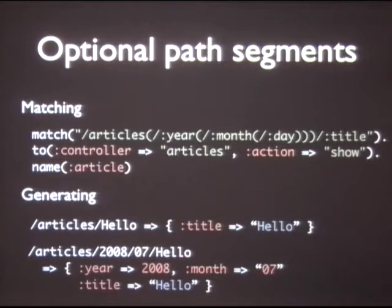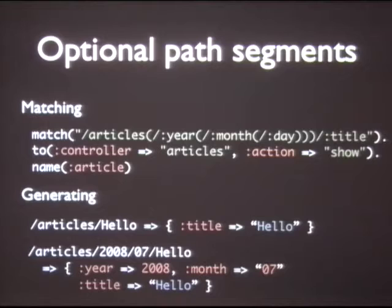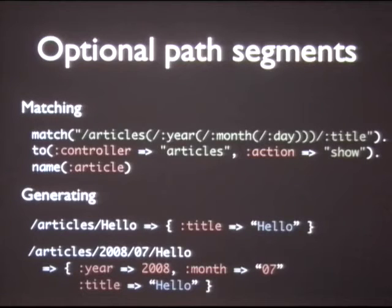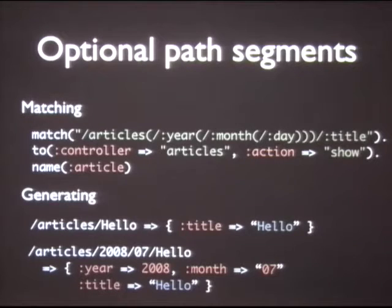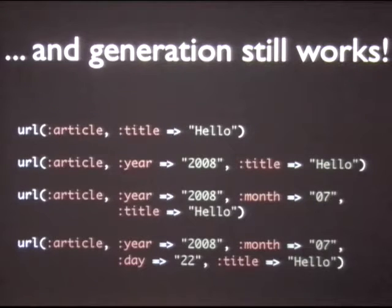Starting to get a bit fancier — I think this is really cool. When you're matching a path, you can wrap any bit of that path in a set of parentheses, and that will tell the router that that section is optional. You can nest them like I'm showing here. So pretty much any set of combinations — articles/year/title, articles/just-title, articles/year/month/title — all work. It's smart enough that you can put those optional segments in the front, end, or any part of the path. You can also put it in a match block at the very top of the router file and include every route in it as an optional segment that is matched.